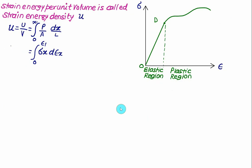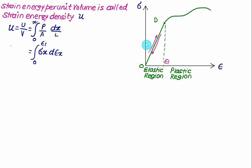If the material is loaded up to the elastic limit, represented by point D on the stress-strain diagram, loading takes it up to that maximum value and unloading returns it to the original point O. We attain strain ε₁ on loading and return to zero on unloading. The area under this diagram represents the strain energy per unit volume, the strain energy density.